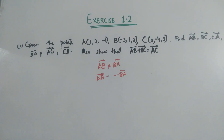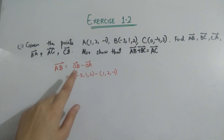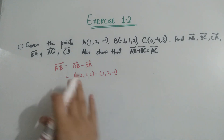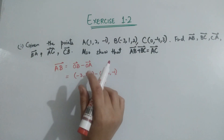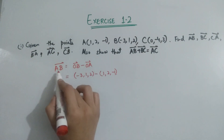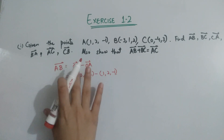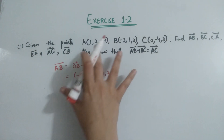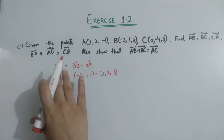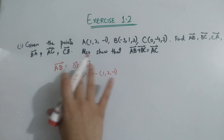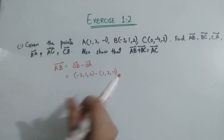Write AB equal to OB minus OA. Some students write AB equal to B minus A, but that is wrong because B and A are points, not vectors. The difference of two vectors should be a vector, not the difference of two points. Keep this in mind.